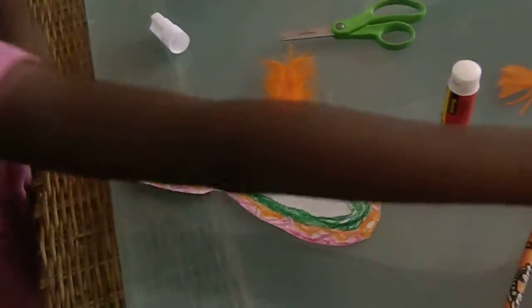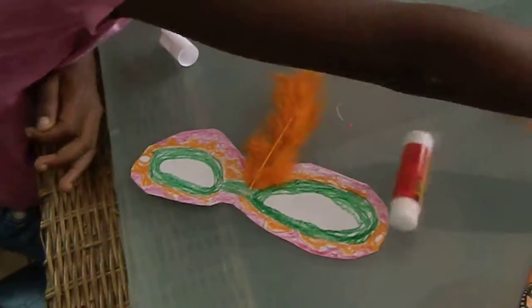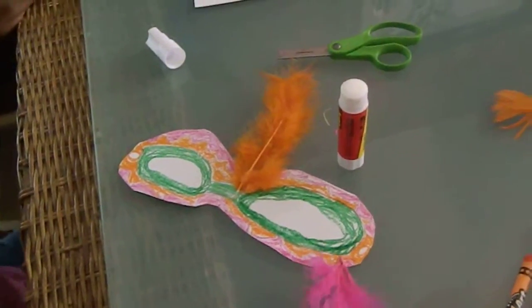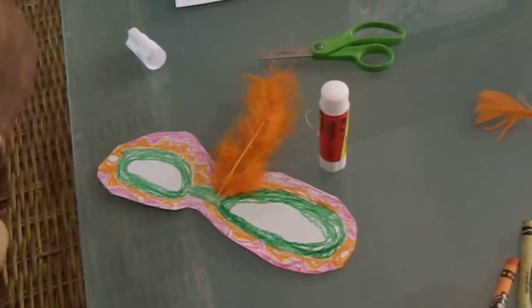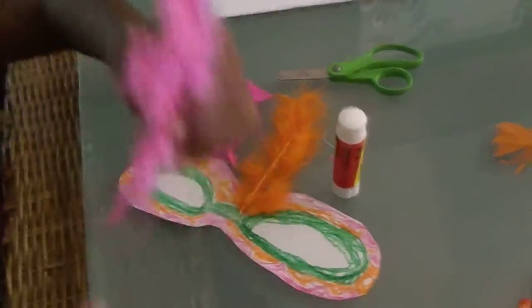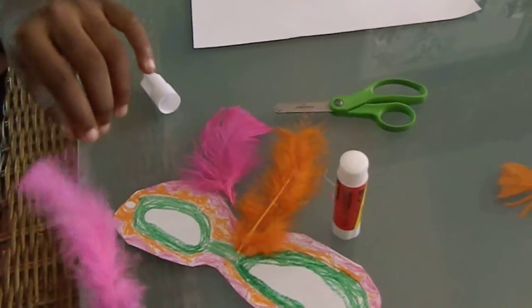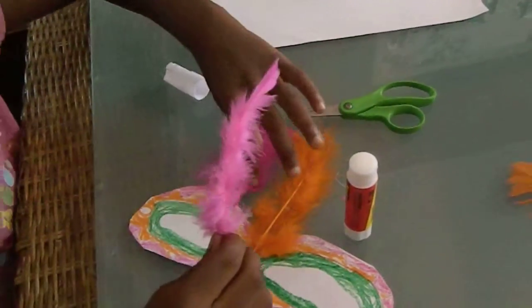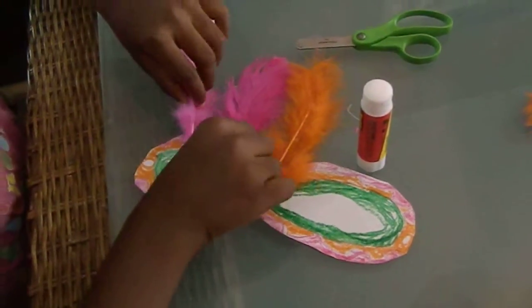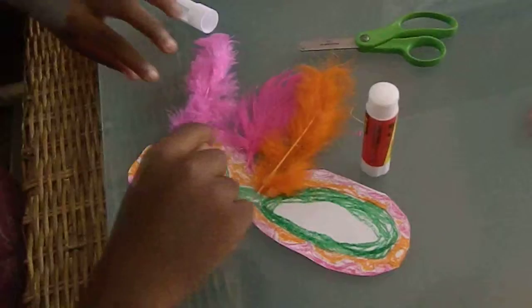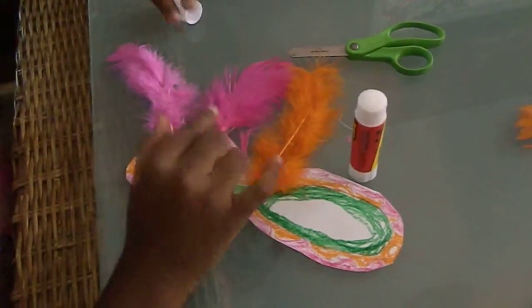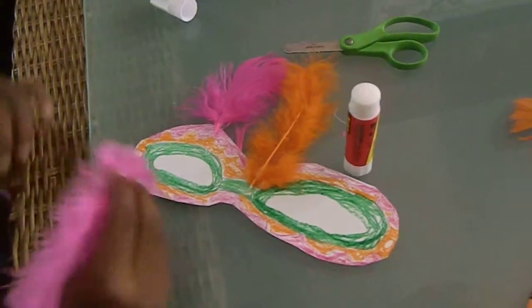And then if you have paint, if you want to put on more, you can put on feathers. Feather on top of the thing. You can put feathers right here. You can put them closed or apart. And clean the toilet. Or you can put them on the bottom if you want to.